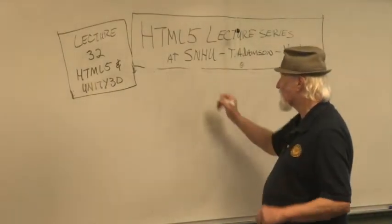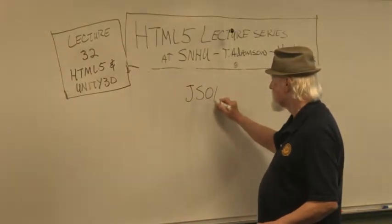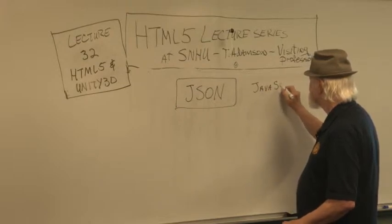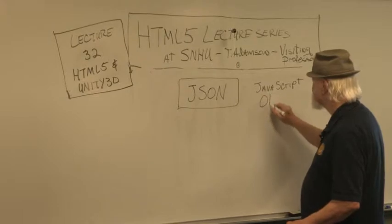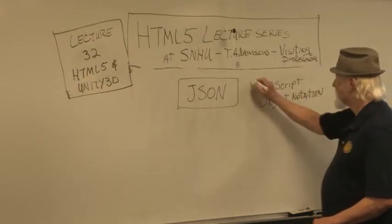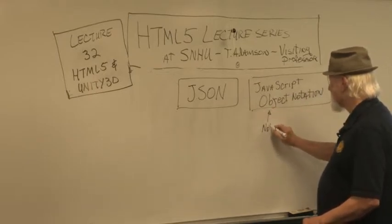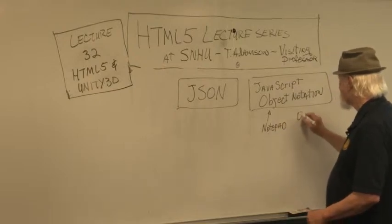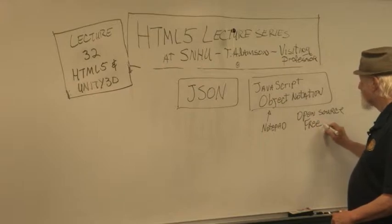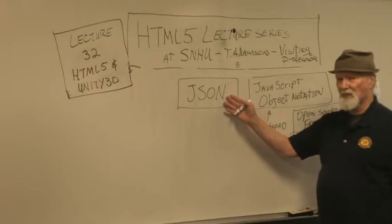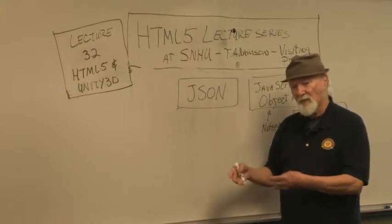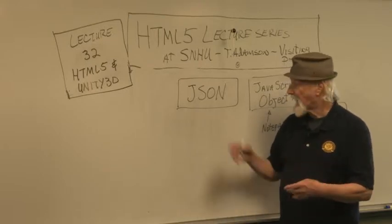One of the things that we saw in the last lecture is we saw JSON files. JSON stands for JavaScript Object Notation. Since it's written in JavaScript, the editor is Notepad. It's open source and it's free. Most browsers have JSON built into it. And what JSON will do — JSON will store data as objects, and it'll store an array of objects. And that object itself can now be stored as a string, and it can transmit data that way.